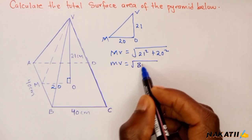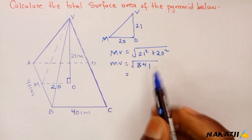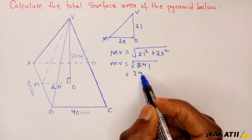We'll have the square root of 841. Using the calculator, the square root of 841 is 29. That is the height of this triangular face.